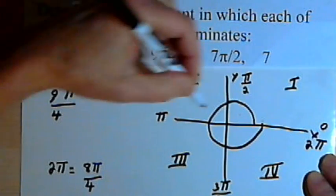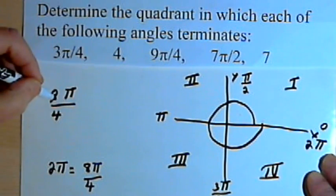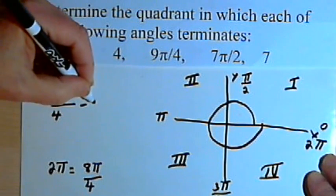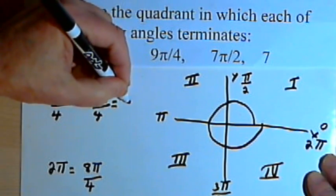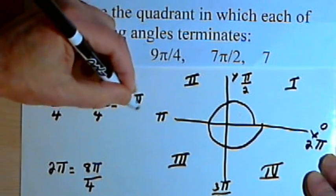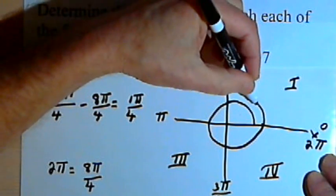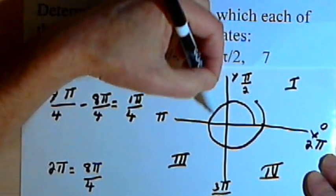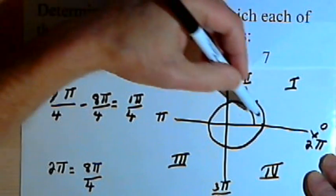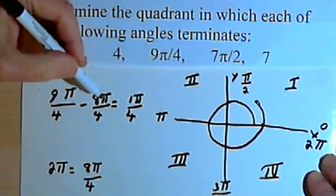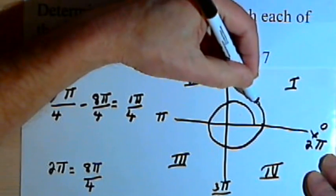So that would mean I had gone 8π/4 and then continued. Let's see, 9π/4 minus 8π/4 would be just 1π/4, 1 quarter π. So I'm going to end up in this first quadrant. In other words, I've traveled a complete circle—that's 2π or 8π/4. I want to find out how much further I've gone, so I subtract that 8π/4 from the 9π and I end up here in the first quadrant.